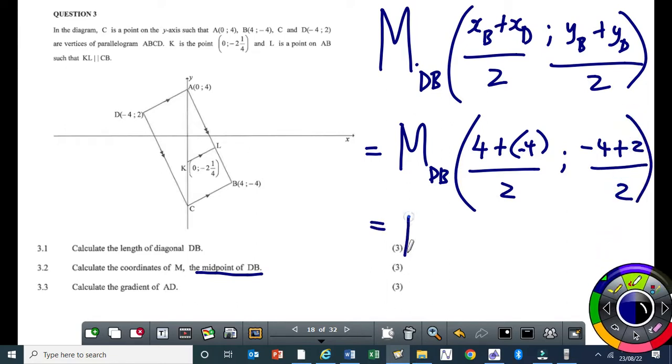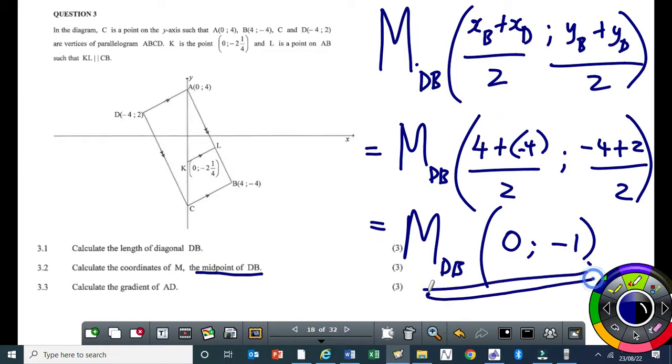So the final answer, that is the coordinates of the midpoint, is gonna be 0, because 4 minus 4 will give me 0. Then minus 4 plus 2 is negative 2 divided by 2, you get negative 1. So this will be the answer. It's not difficult.